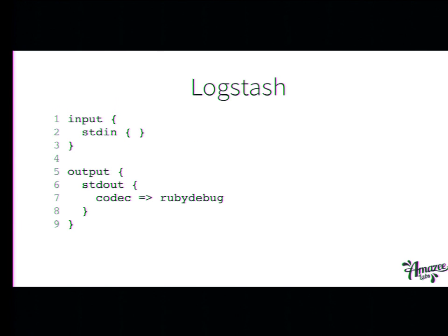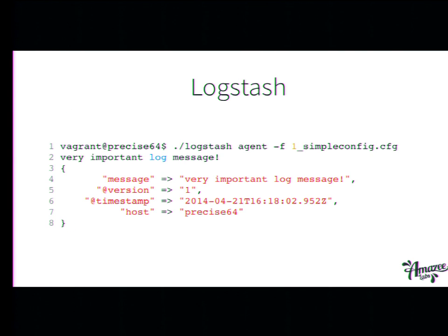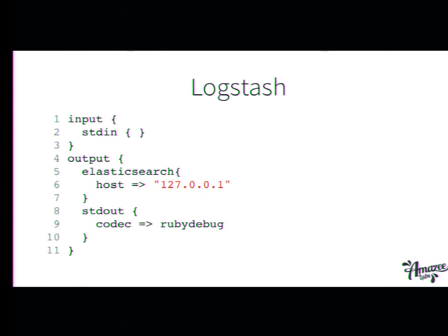Looking at the configuration file, you define an input — for example standard in — you define an output with a codec ruby debug, and when you start Logstash, you type a log message and it will output that. You can also say I want it outputted to Elasticsearch, which listens on localhost, and also split it to standard out just for debugging reasons. That's a time saver.